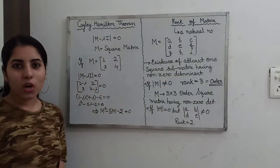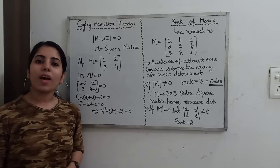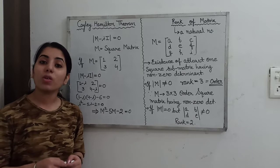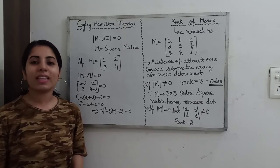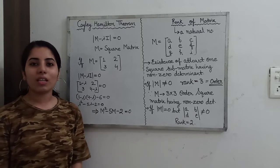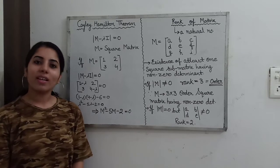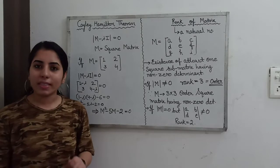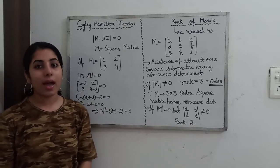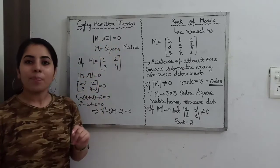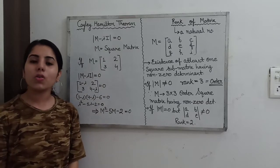The very first topic we are having here is the Cayley-Hamilton theorem. The Cayley-Hamilton theorem statement is that every square matrix satisfies its own characteristic equation. That means we are mainly focusing on the square matrix. The characteristic equation — if you are not familiar with it, I have talked about this in previous videos of matrix uploaded on this channel. The characteristic equation is: determinant of (M minus lambda I) equals zero. This equation is also known as the eigenvalue equation.